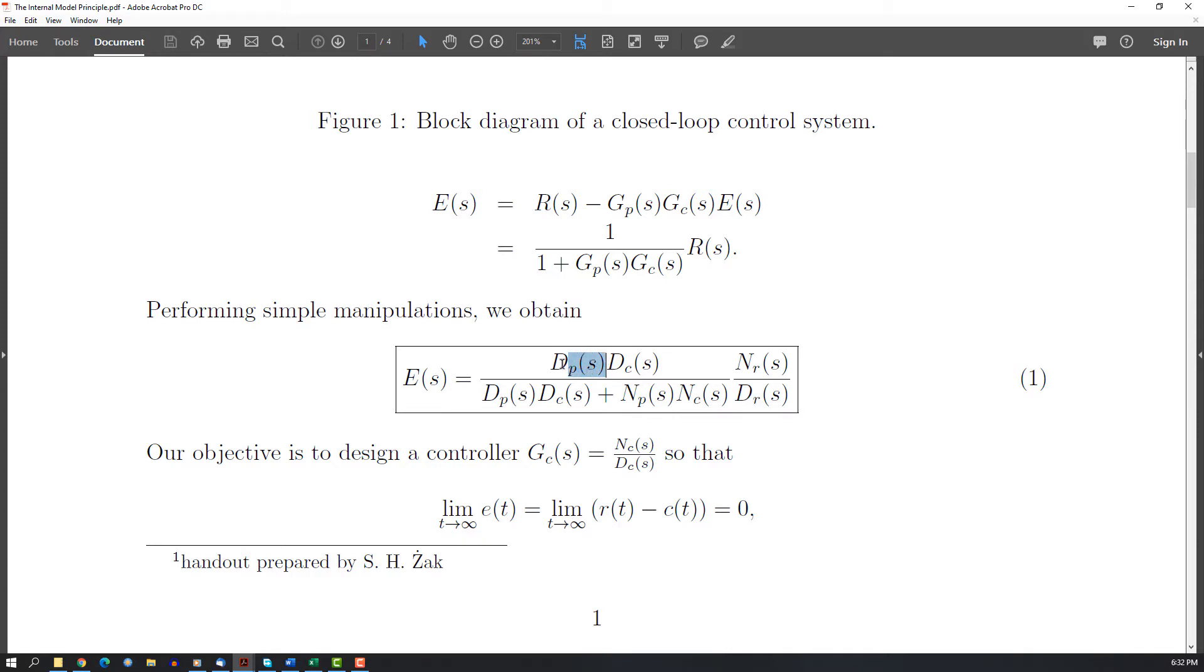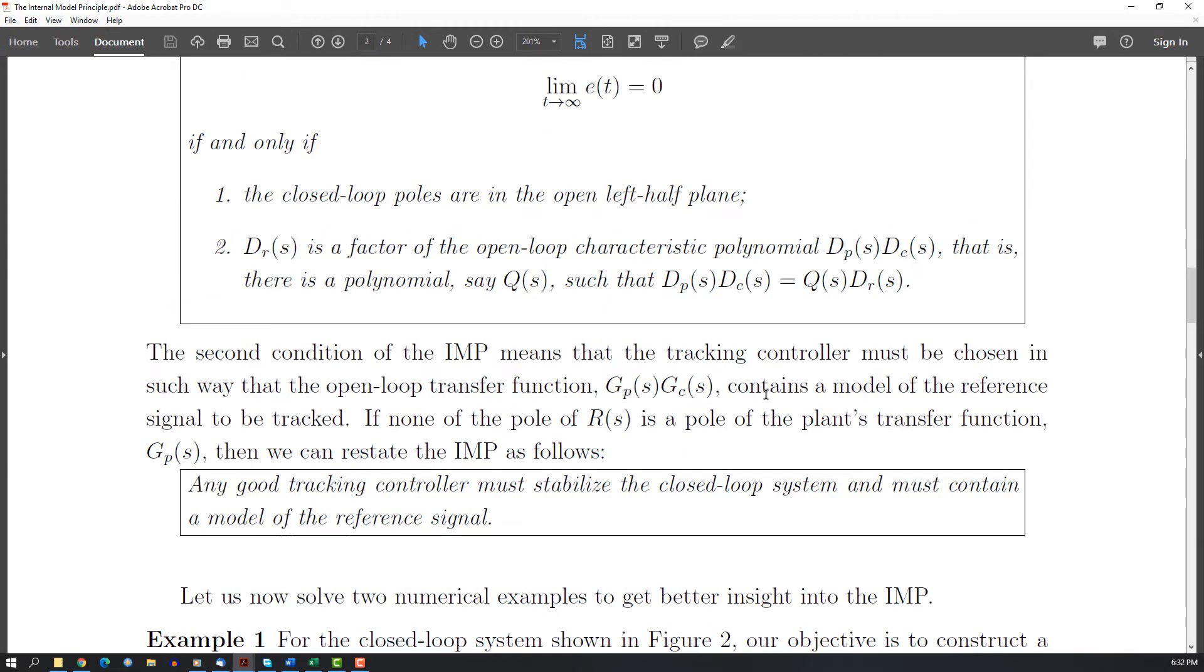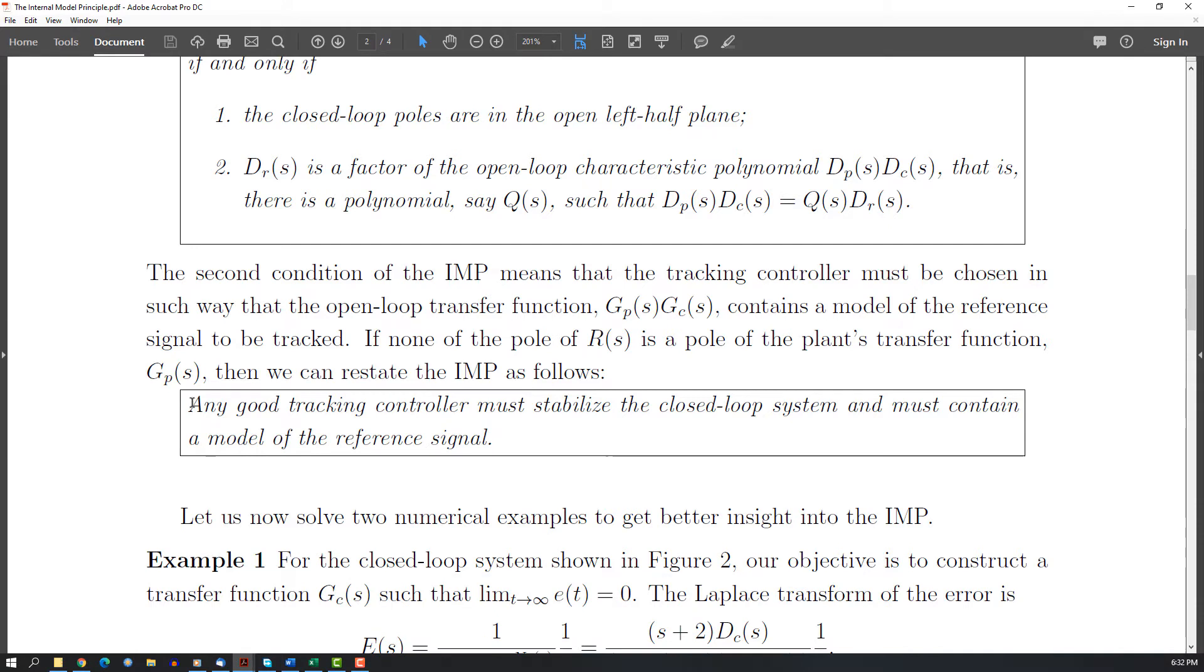Your controller - the poles of your controller - have to contain all the poles of the reference you want to track. So if you want to have a tracking controller, your controller has to contain the model of your reference. That's why they call it internal model.